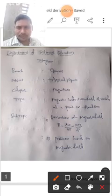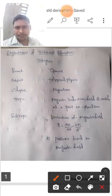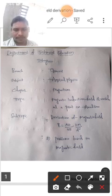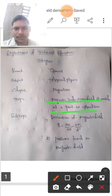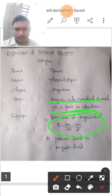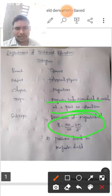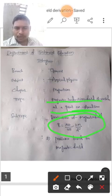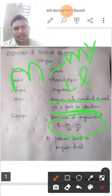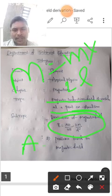Hi to all. Today in this video, I am going to explain from the chapter of magnetism the most important essay: magnetic induction field strength at a point on the axial line. We are going to prove that B is equal to μ₀/4π × 2M/d³. Magnetic field strength is force acting per unit pole. Capital M is magnetic moment, which is the product of pole strength and the length of the bar magnet, and its units are ampere meter square.